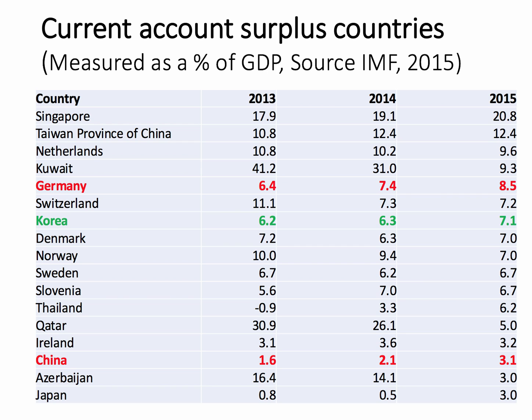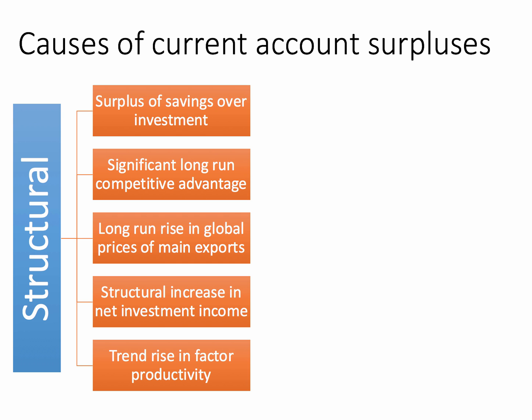What are the main causes of a country running a current account surplus? I want to make a distinction between structural causes, which are essentially about supply side explanations, and cyclical causes, which focus more on the near term and what's happening in the economic cycle. From a supply side point of view, surplus countries tend to have a surplus of savings over investment. Take Germany, which has a very high savings rate relative to its investment rate — those surplus savings could have been used to buy imported goods and services, but they haven't, and that's one reason why they're running a current account surplus.